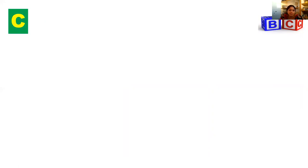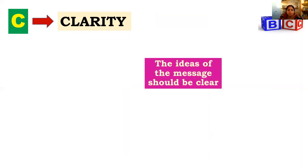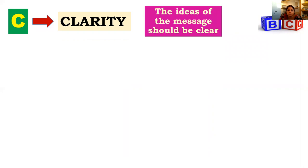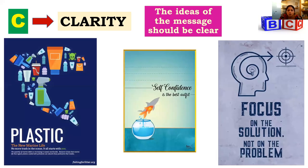The third principle, C, stands for clarity. Whatever information you give in your poster must be clear. The idea of the message should be very clear — the picture should be clear and relevant to the situation or topic for which the poster is selected.